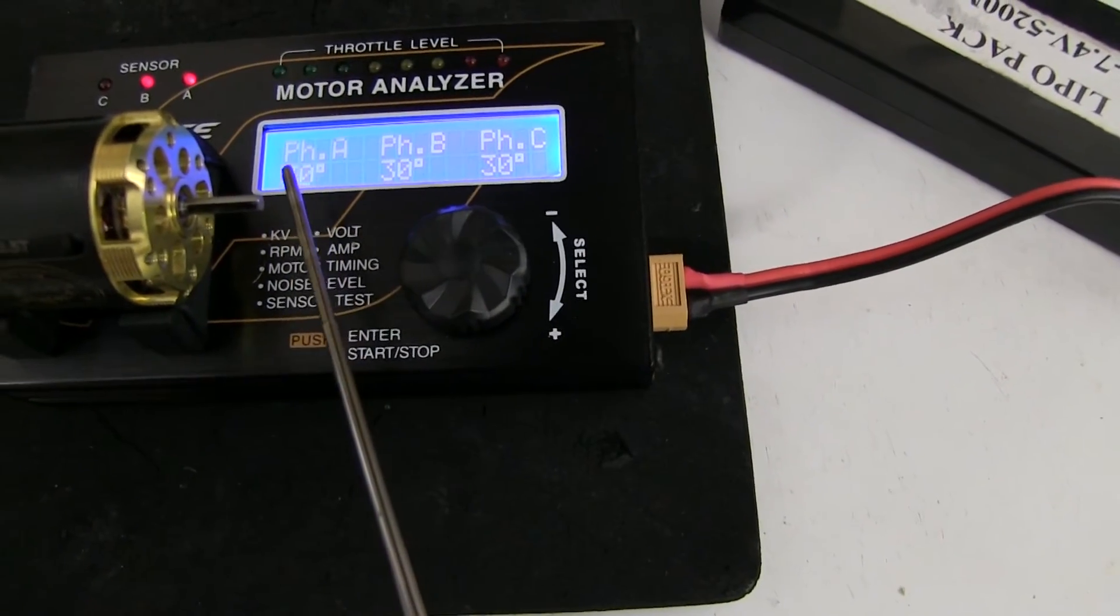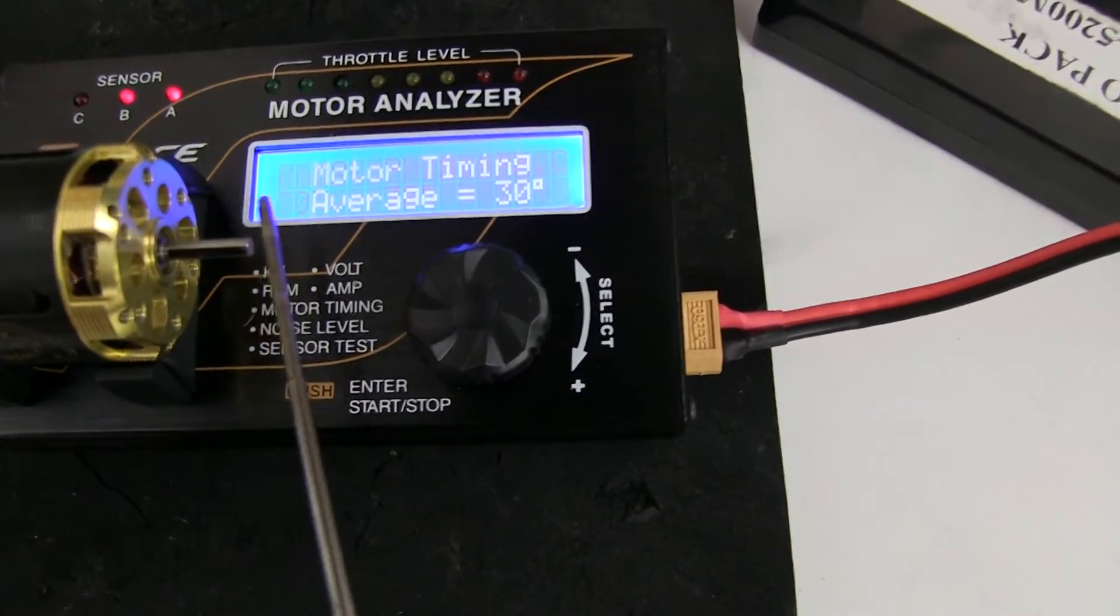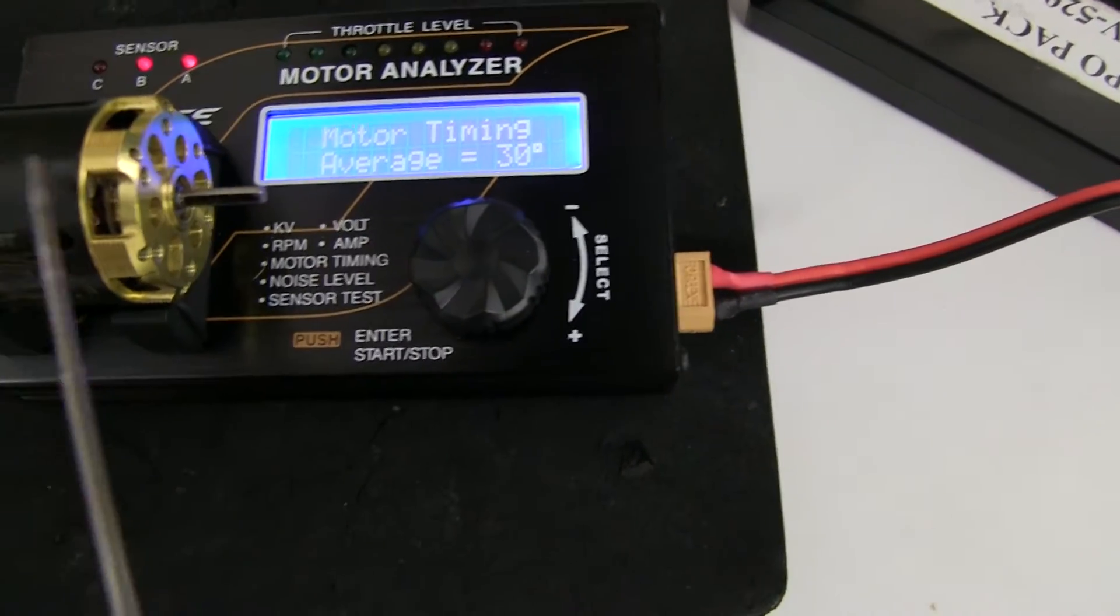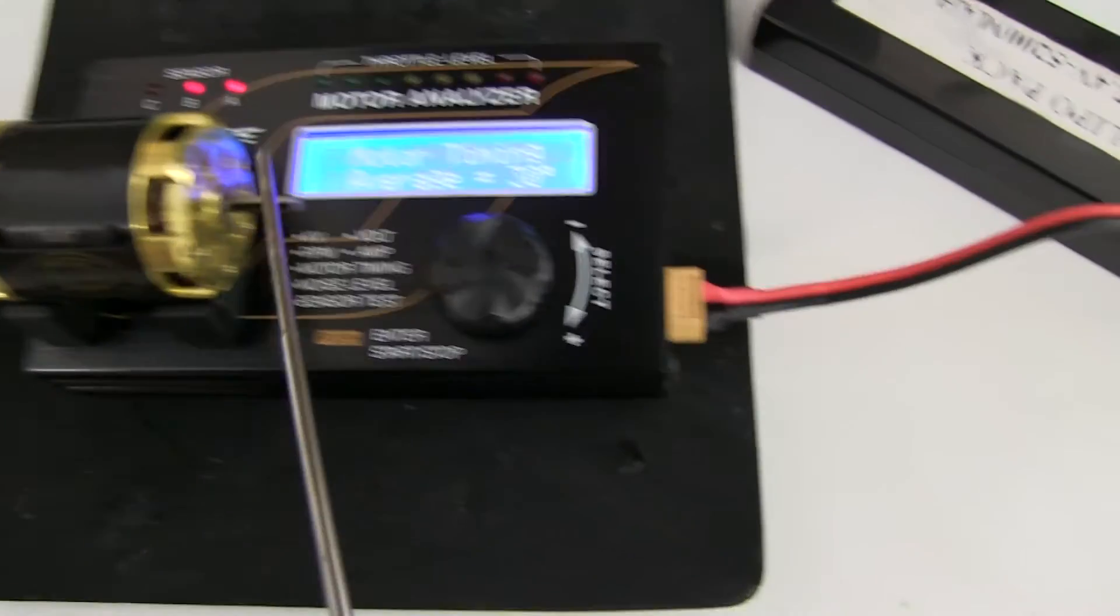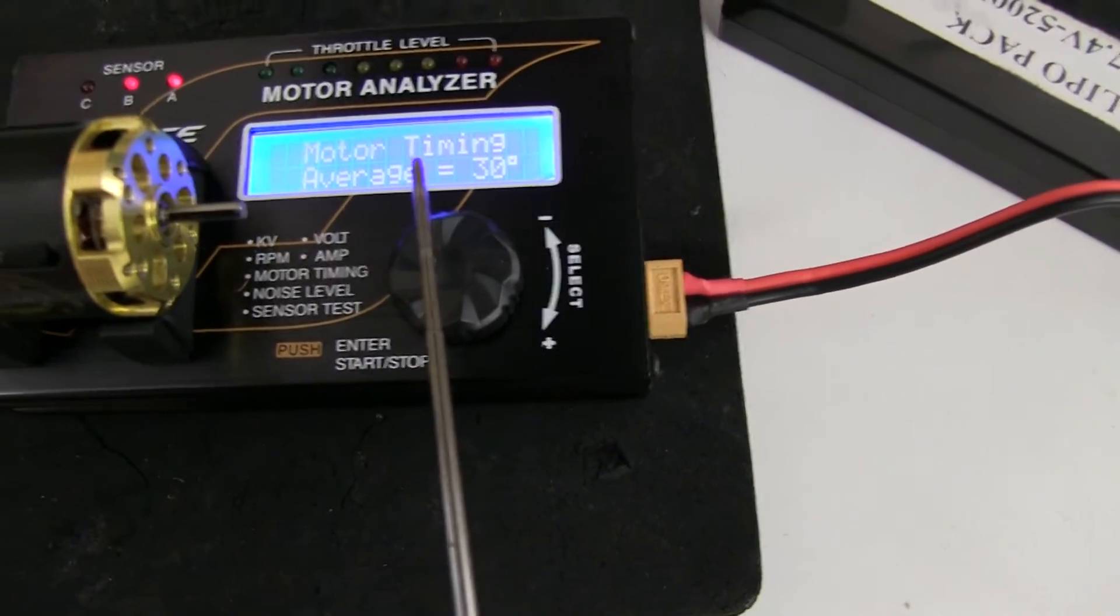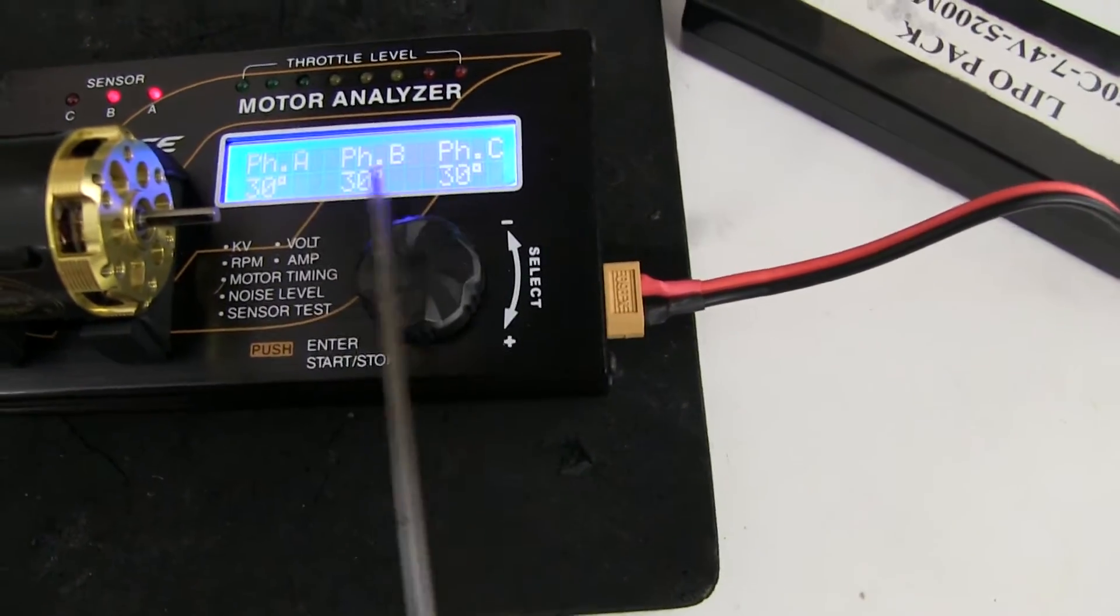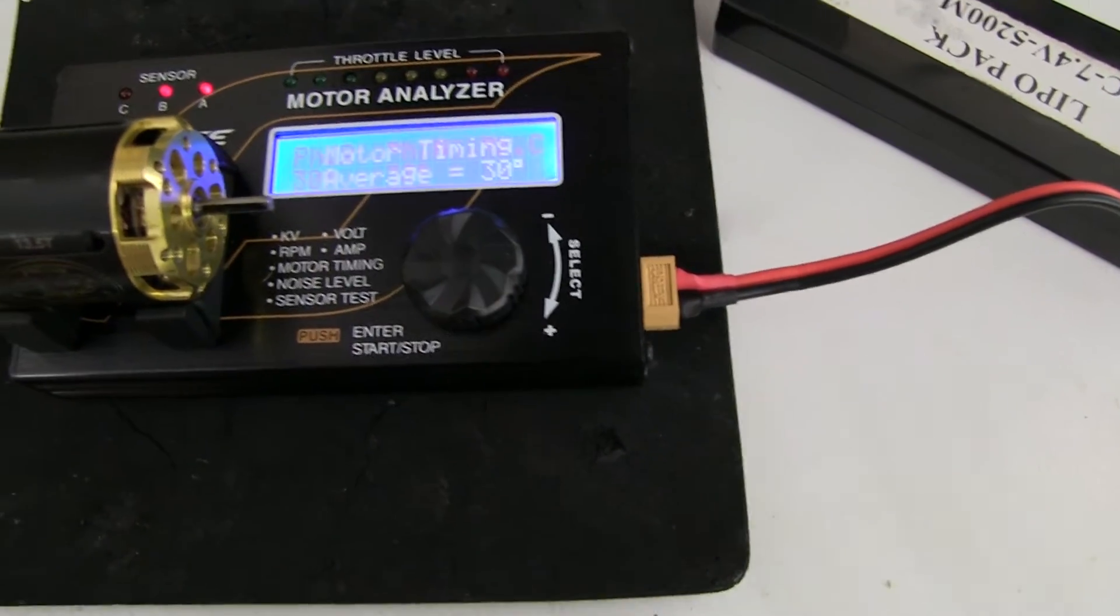But another extra thing it gives you is the number of degrees on each of the sensors. Now, these two pole motors have got three sensors, because there are three coils. And a properly made motor should have identical readings, ABC 30. So, that's excellent.